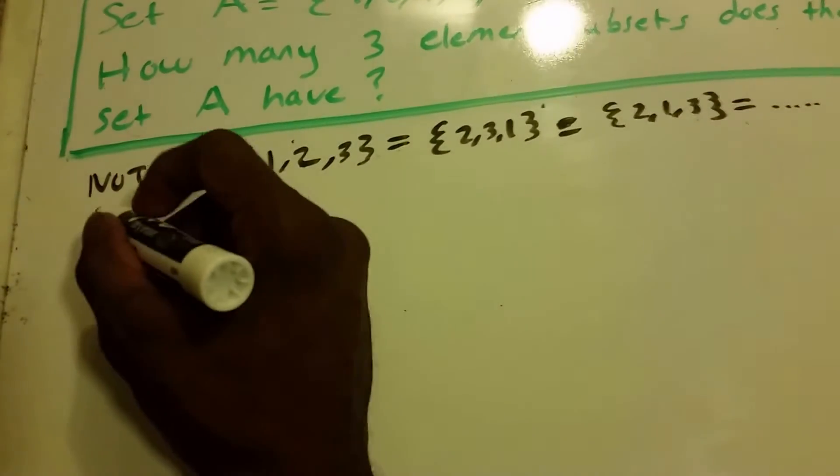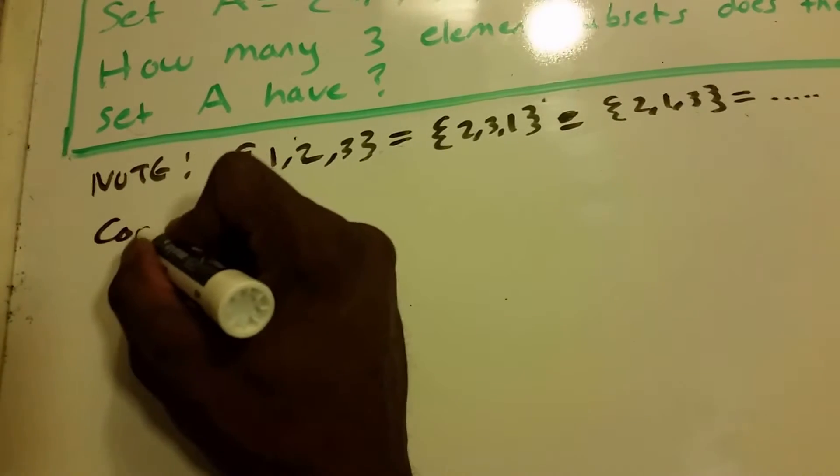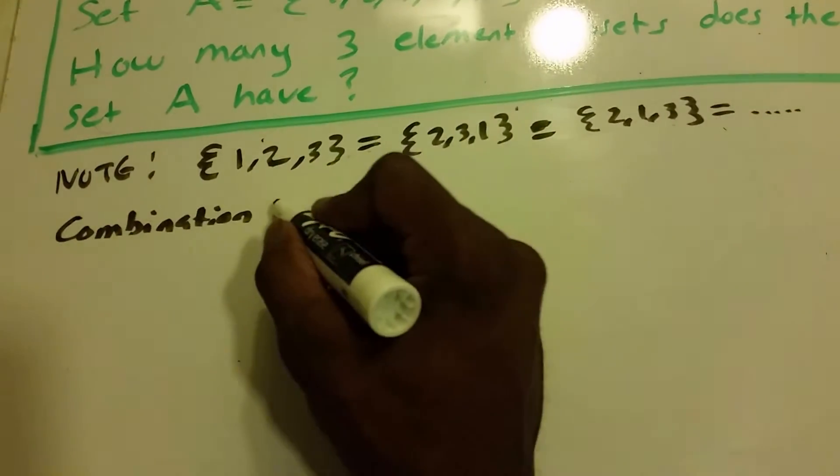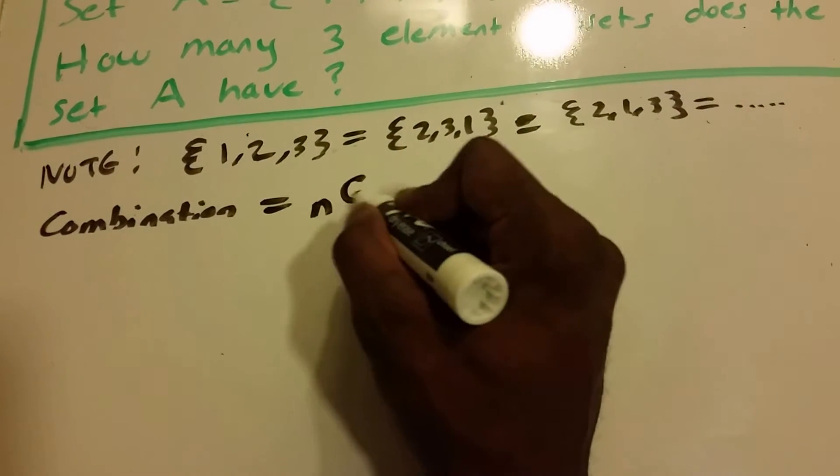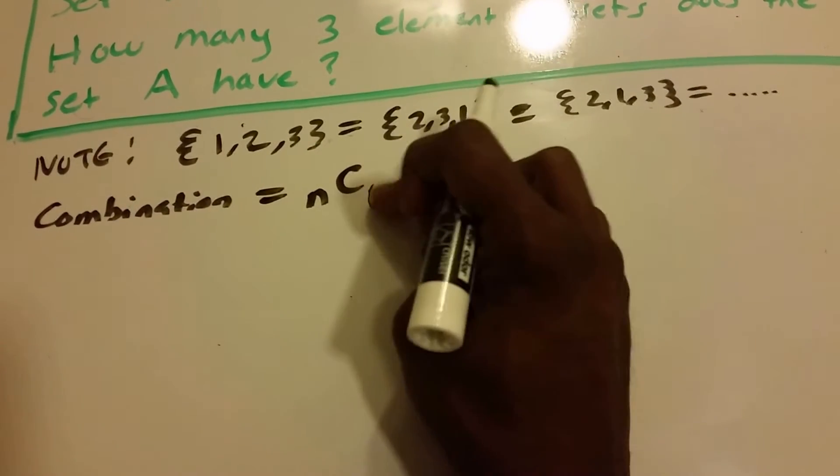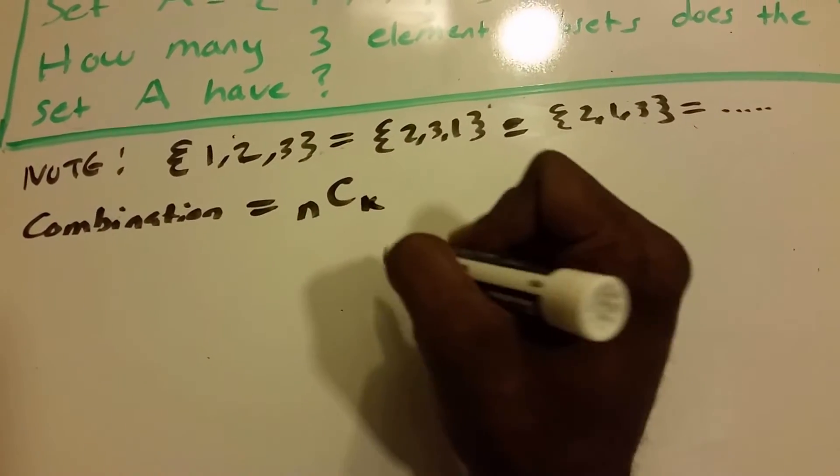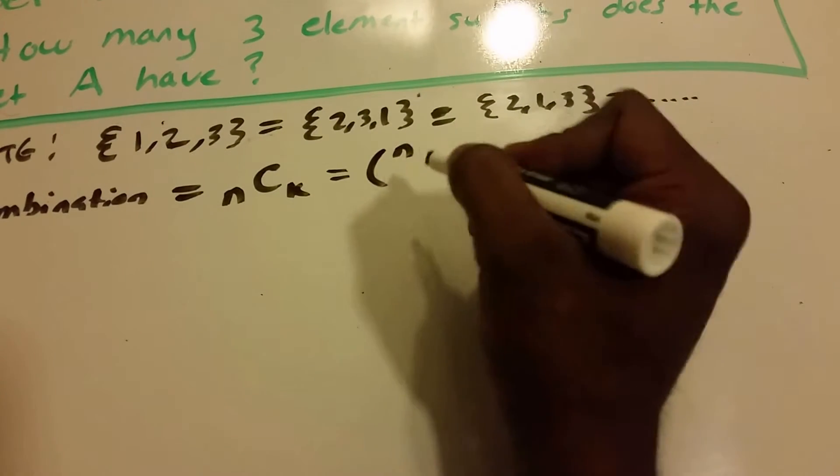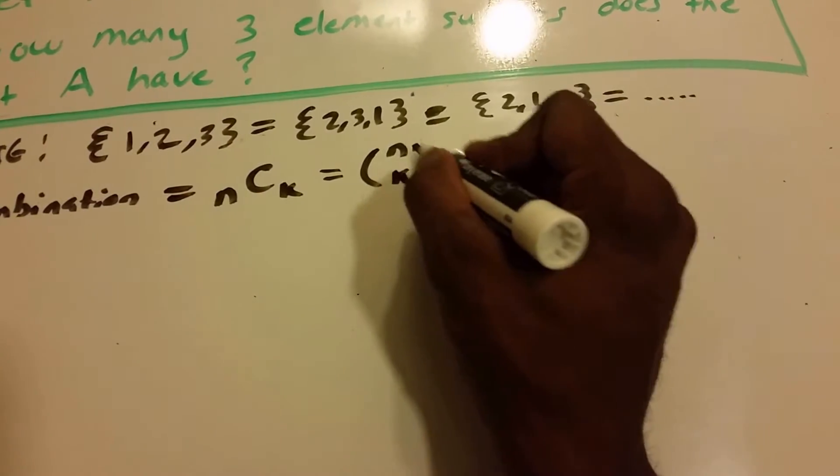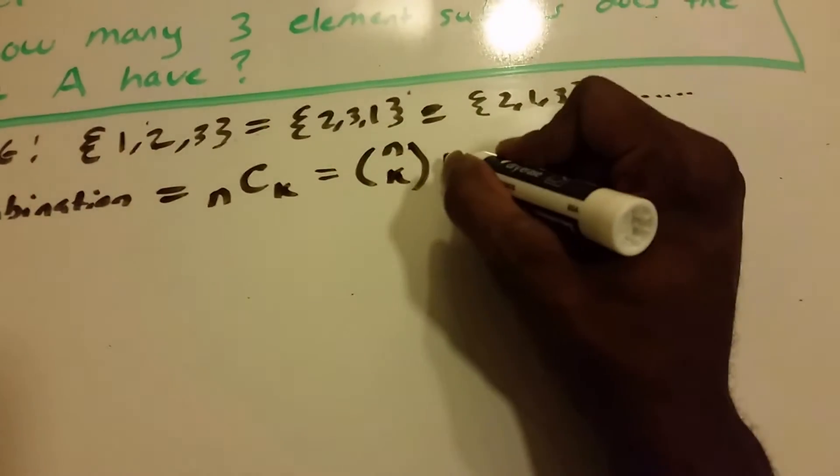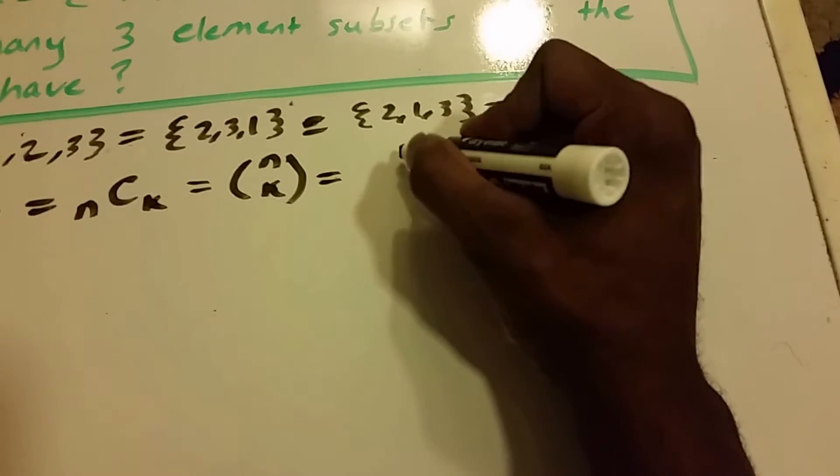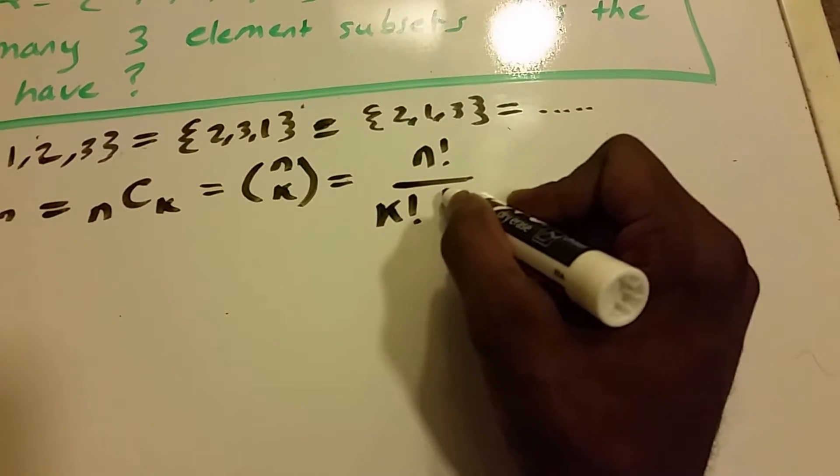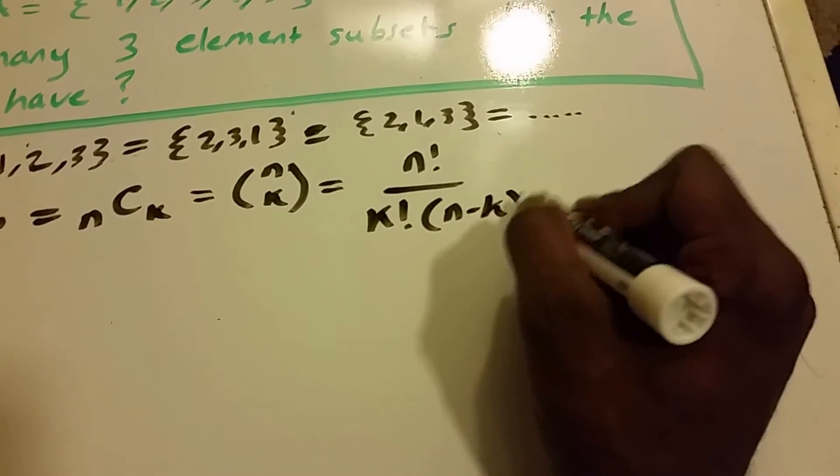So we need to use the combination formula. The combination formula, you may see it sometimes as nCk, or you might even replace the k with an r. And then you also may see it look like this: we have n elements, and we're choosing k of them. And then this is the actual formula. This is equal to n factorial divided by k factorial times n minus k factorial.